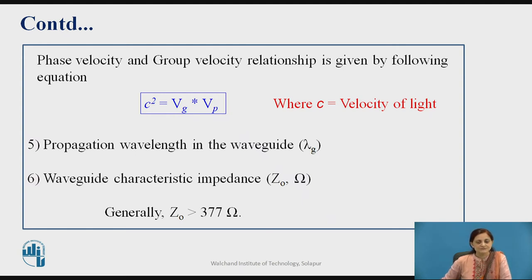Propagation wavelength in the waveguide, that is lambda g, is also known as guide wavelength. It is considered with respect to the travelling wave in the waveguide. Waveguide characteristic impedance Z0 is the impedance considered with respect to the cut-off frequency, which in turn is determined by the guide dimensions — that is, the breadth and width of the rectangular waveguide. Generally, the characteristic impedance is greater than 377.